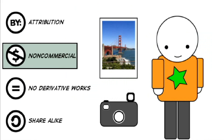Another option is to specify no commercial use. This lets me share my photograph with the world but prohibits others from making money off it. If someone wants to use my photo for commercial purposes, they have to get my permission first — that's when I might ask them for some money.